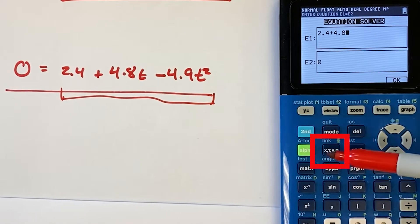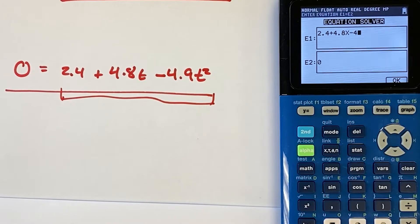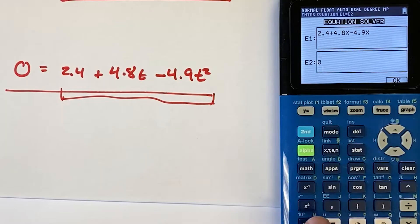Now, instead of using a t, I'm just going to use an X, and I'm going to say minus 4.9X squared.